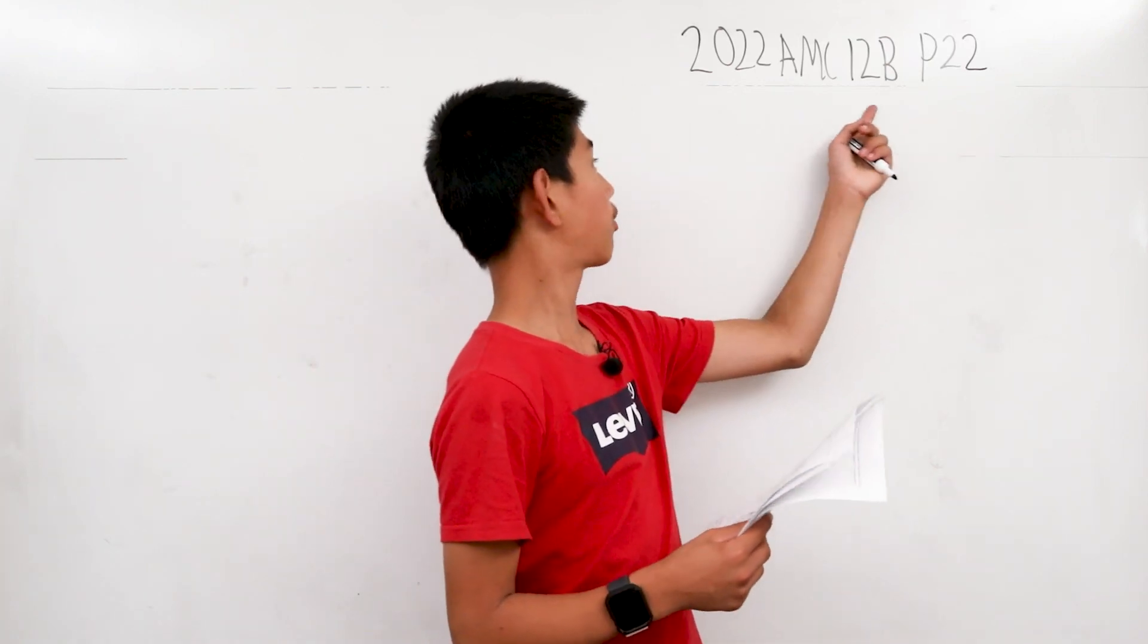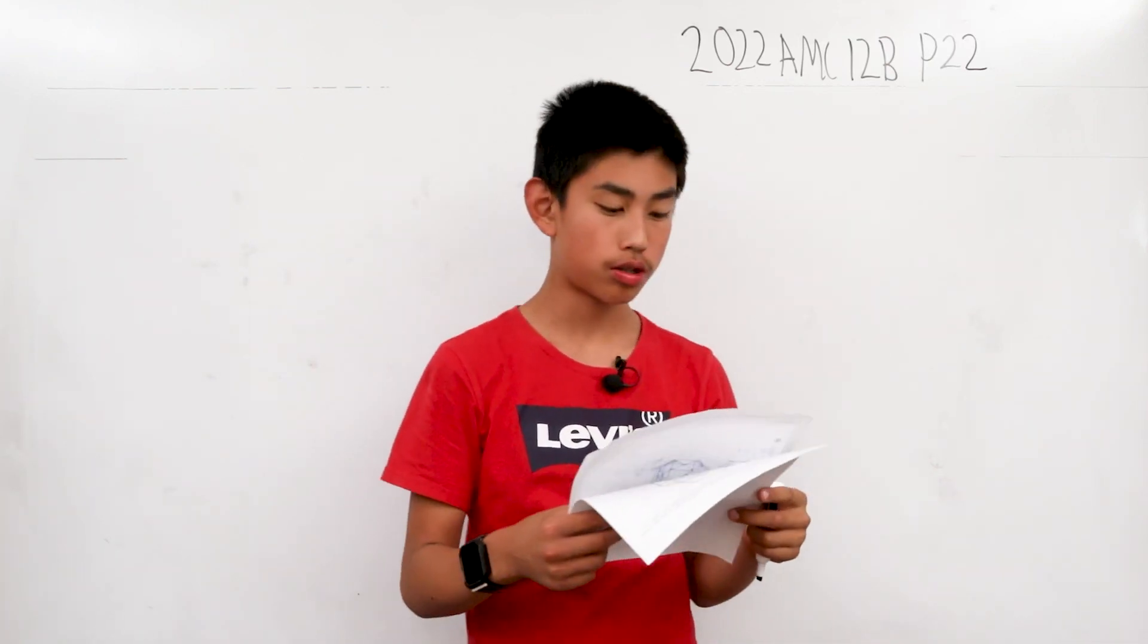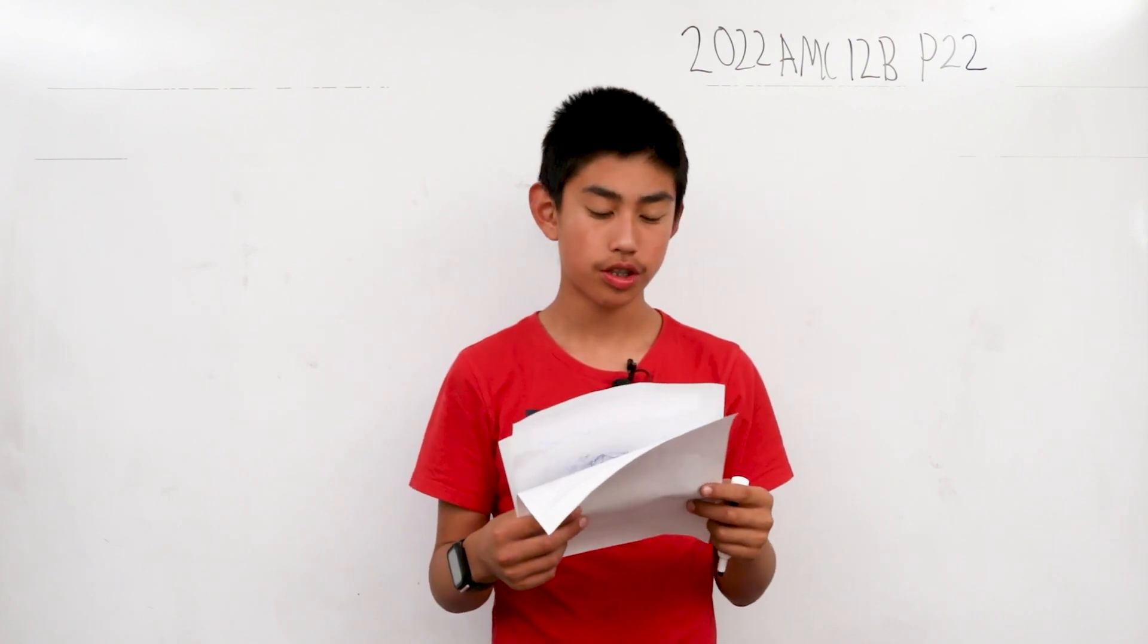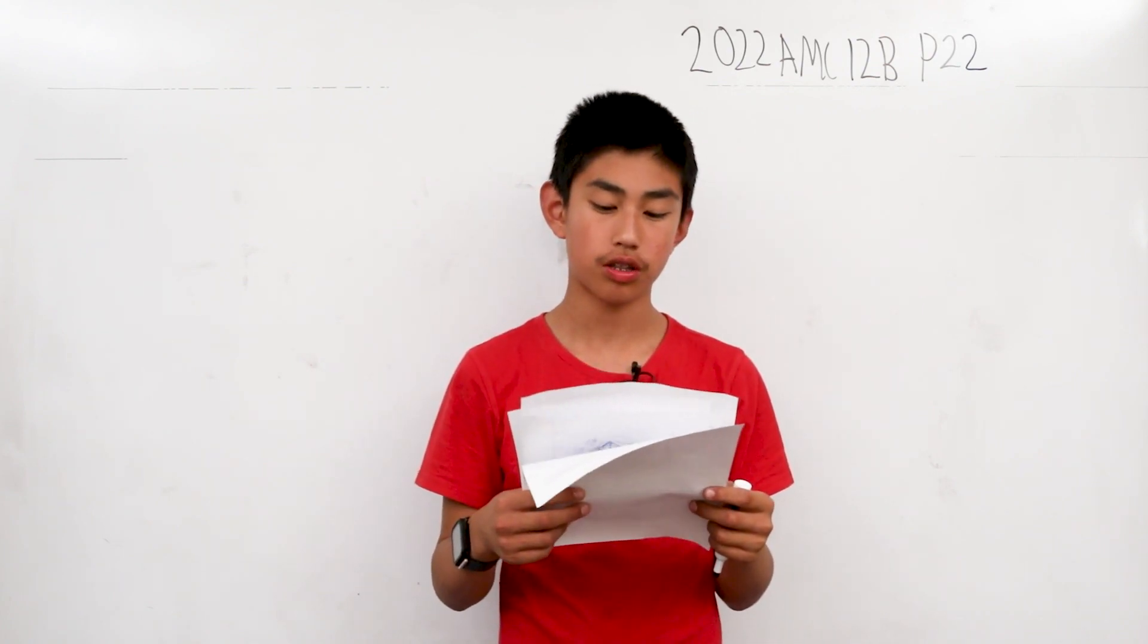We're solving problem 22 from the AMC 10B from 2022. Ant Amelia starts on the number line at 0 and crawls in the following manner.